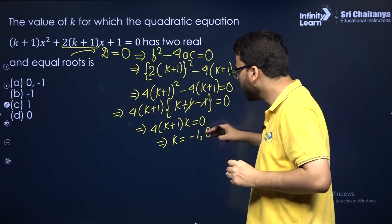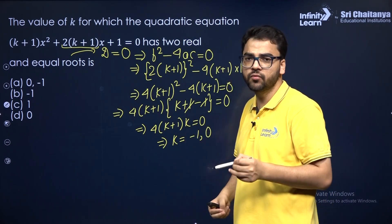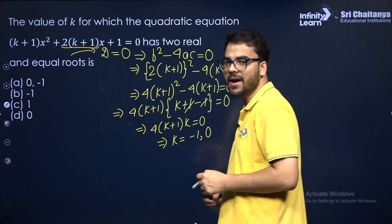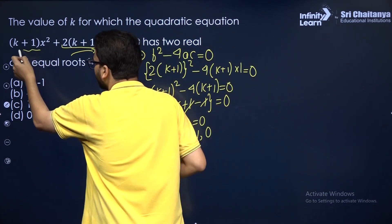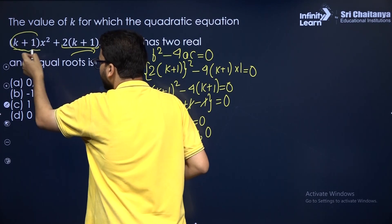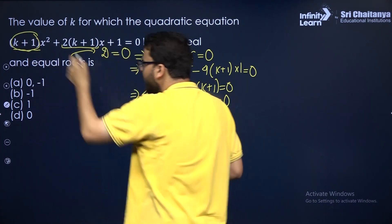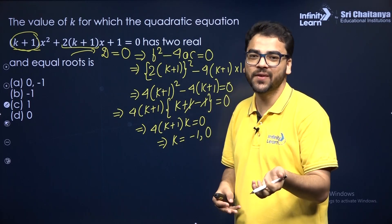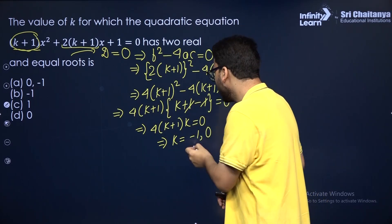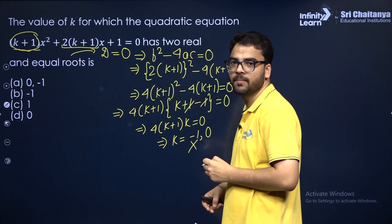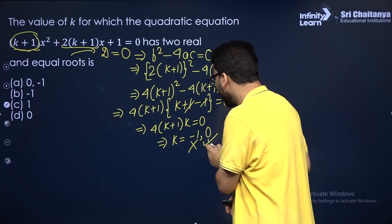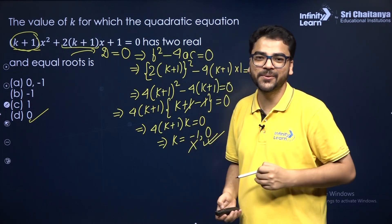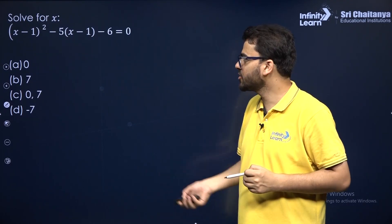Now the question is: are both these values valid? The answer is no. You cannot take K = −1 because if you substitute K = −1, the coefficient of X² becomes 0, and in a quadratic equation the coefficient of X² cannot be 0. Therefore neglect that value, and K = 0 is the answer.